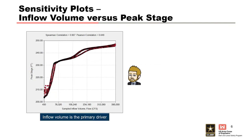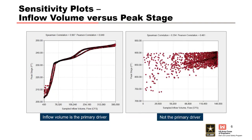The Spearman correlation here is 0.997 and the Pearson correlation is 0.849, and you can see the big range in elevation as different volumes are sampled. In the plot on the right, results for a different dam are shown where the correlation is relatively low — a Spearman of 0.354 and Pearson of 0.461 — which suggests that inflow volume is not a primary driver for peak stage. In other words, large inflow volumes don't necessarily produce higher peak stages.